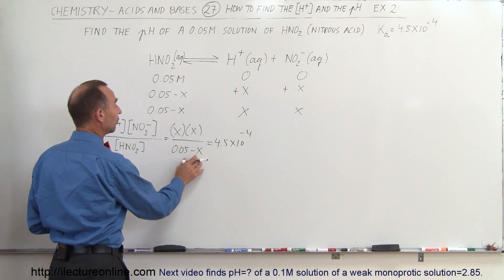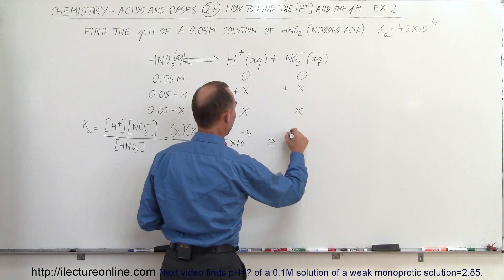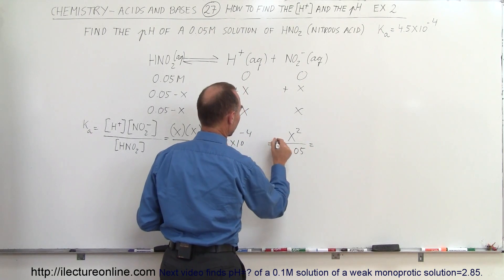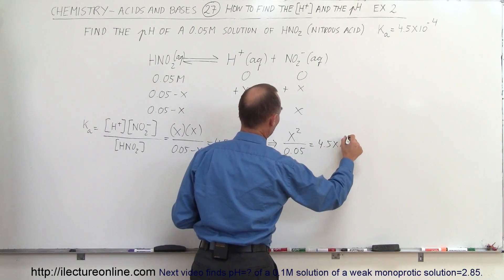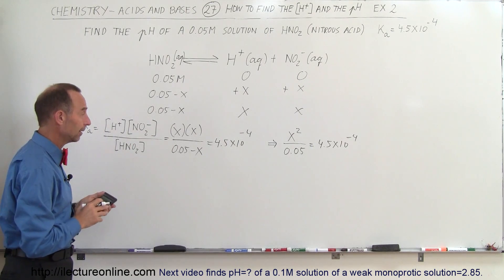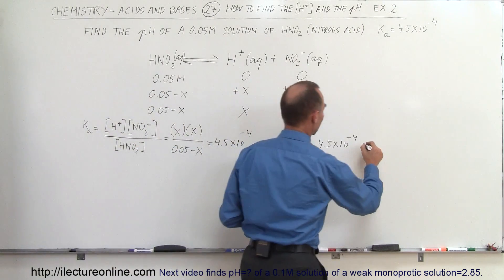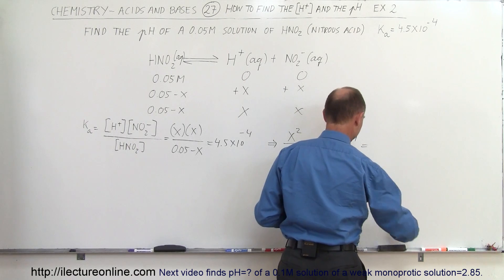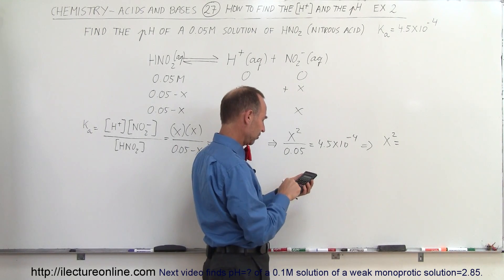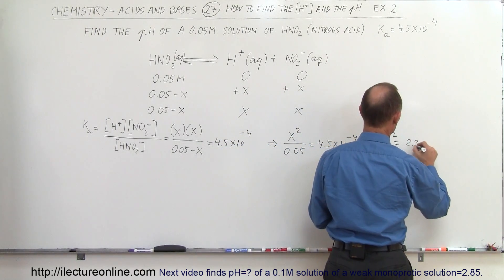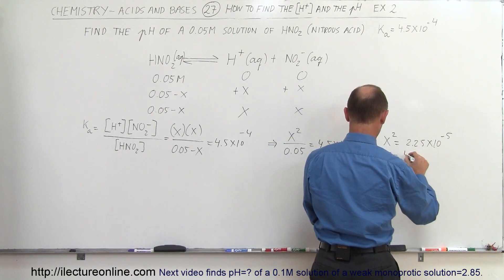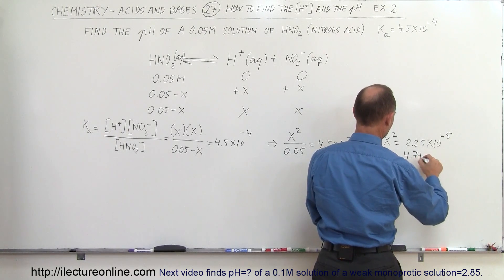First, we say X is small enough so that X squared divided by 0.05 is approximately equal to 4.5 times 10 to the minus 4. That means X squared equals 4.5×10⁻⁴ times 0.05, which equals 2.25 times 10 to the minus 5. Taking the square root, we get X equal to 4.74 times 10 to the minus 3, which would be the concentration of the hydrogen ion.